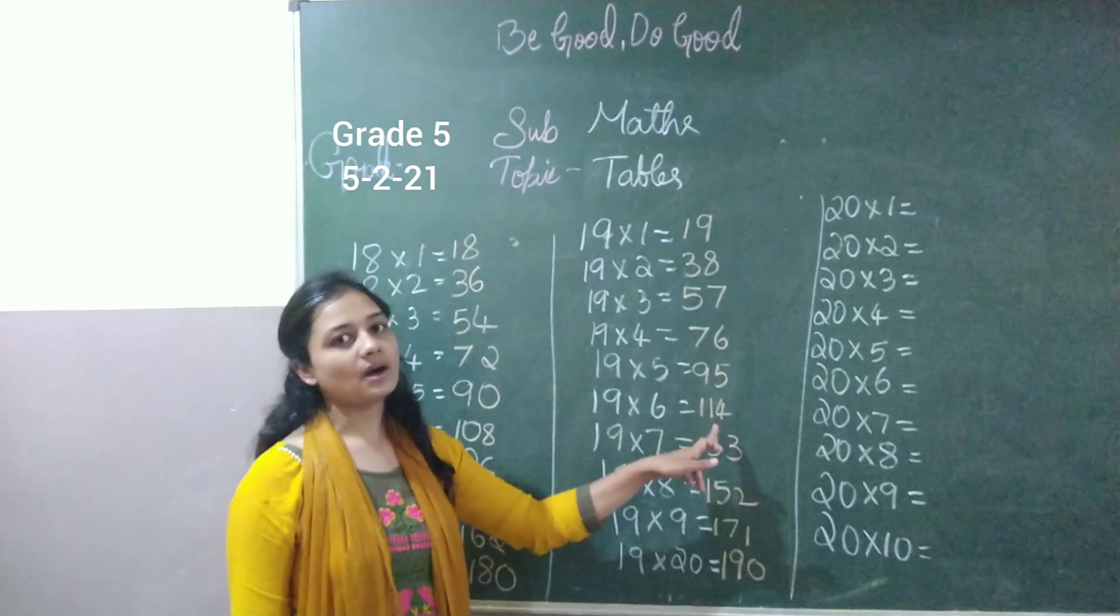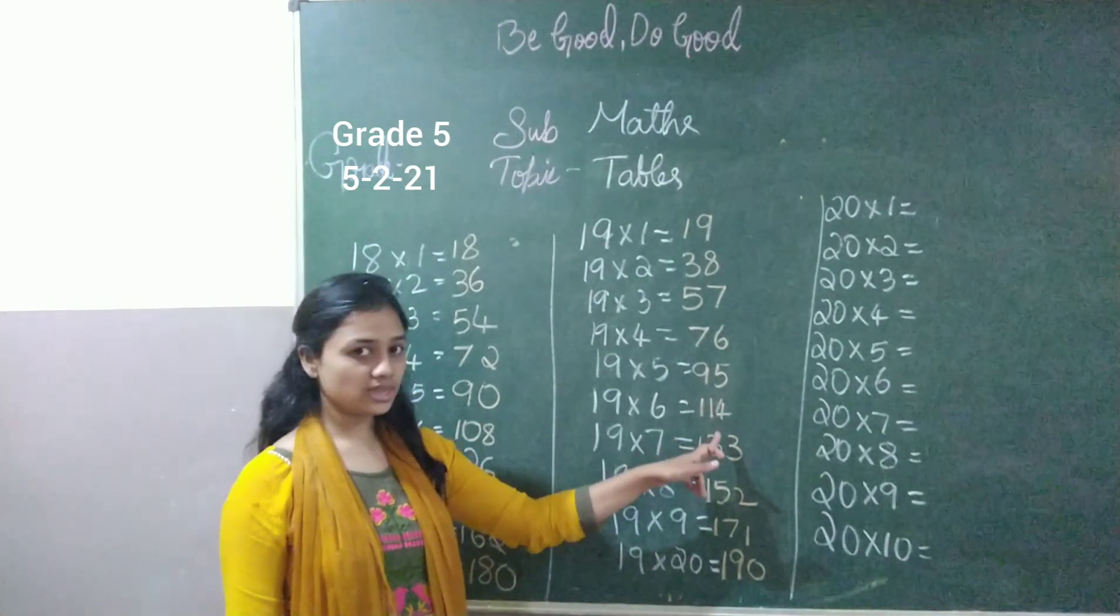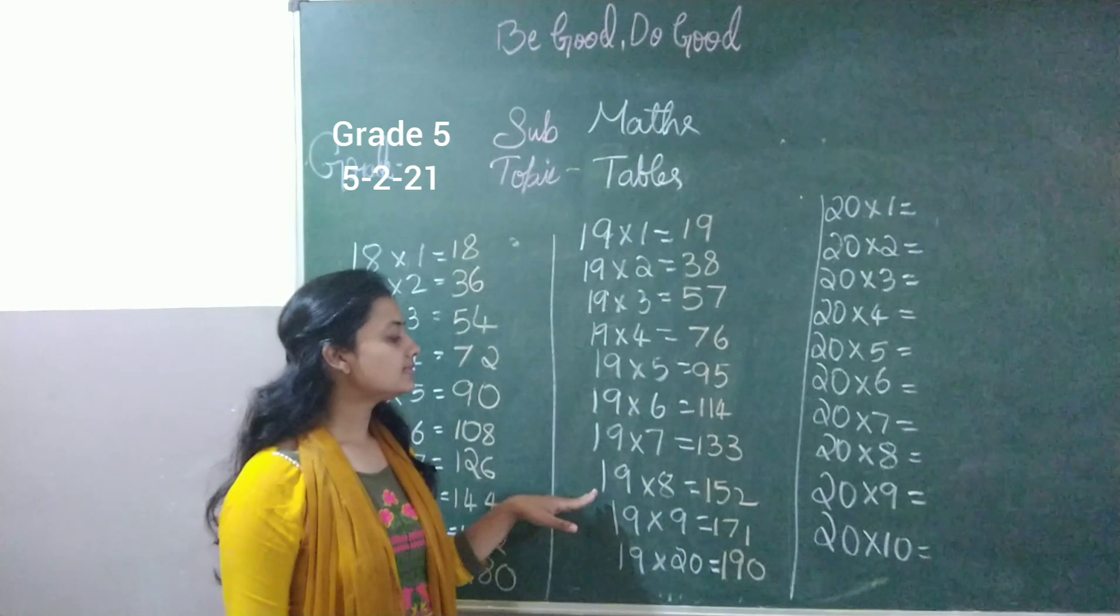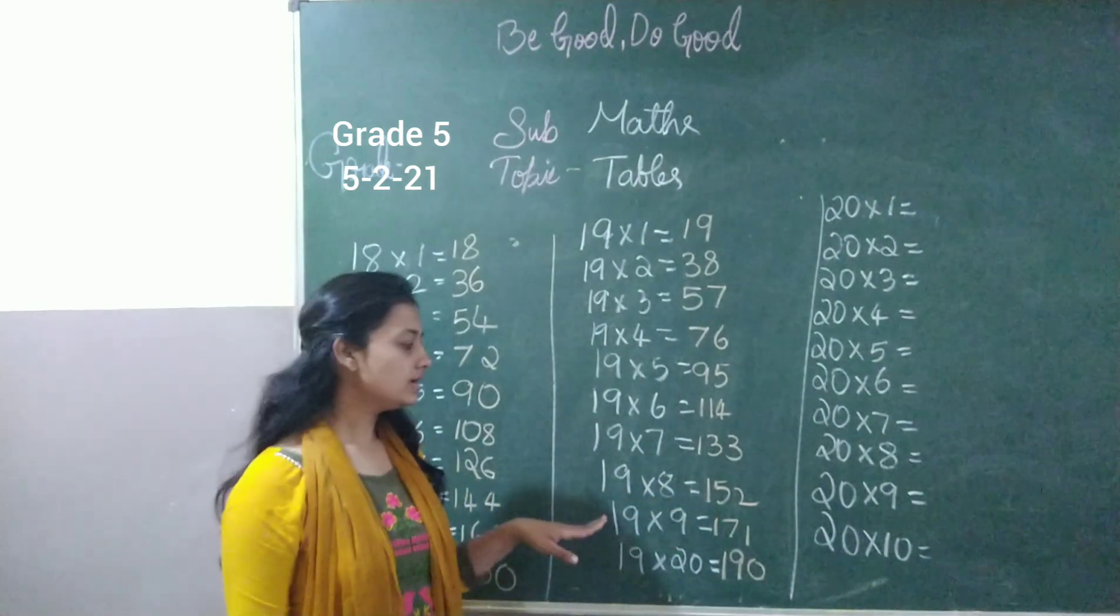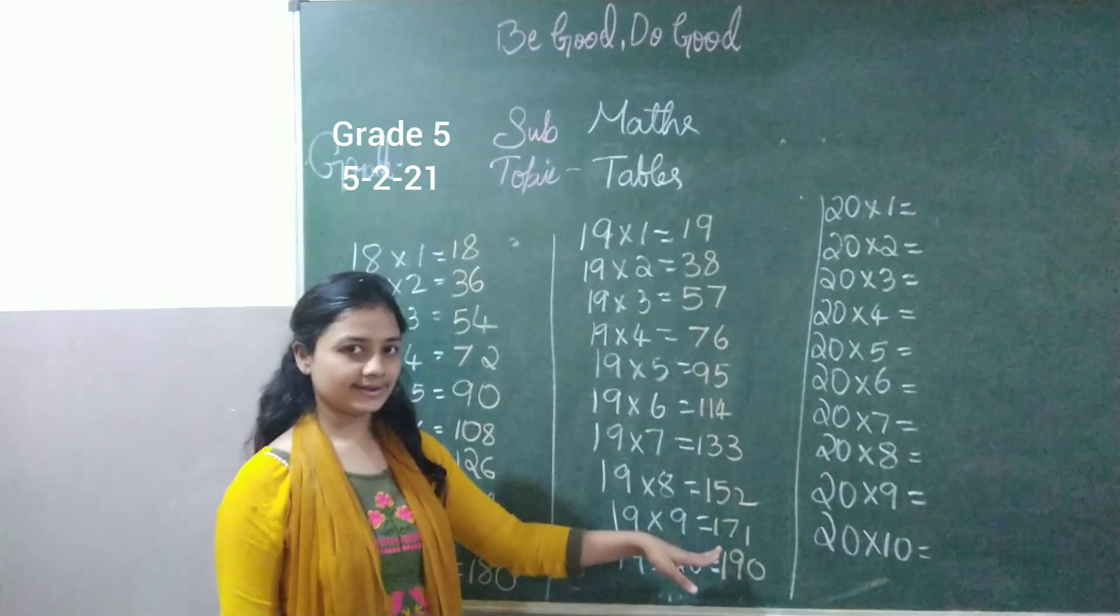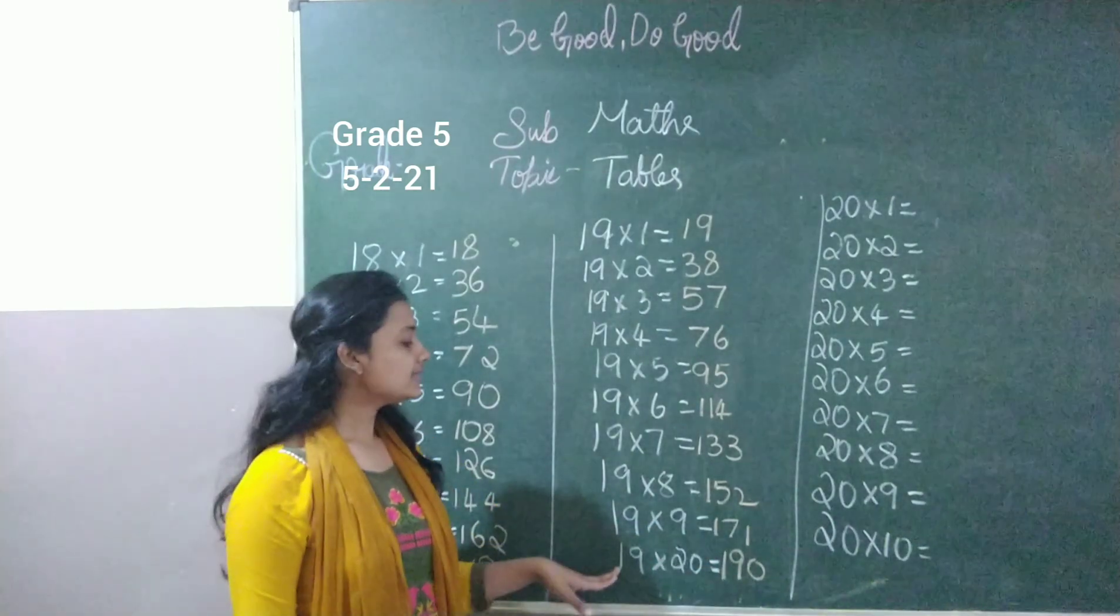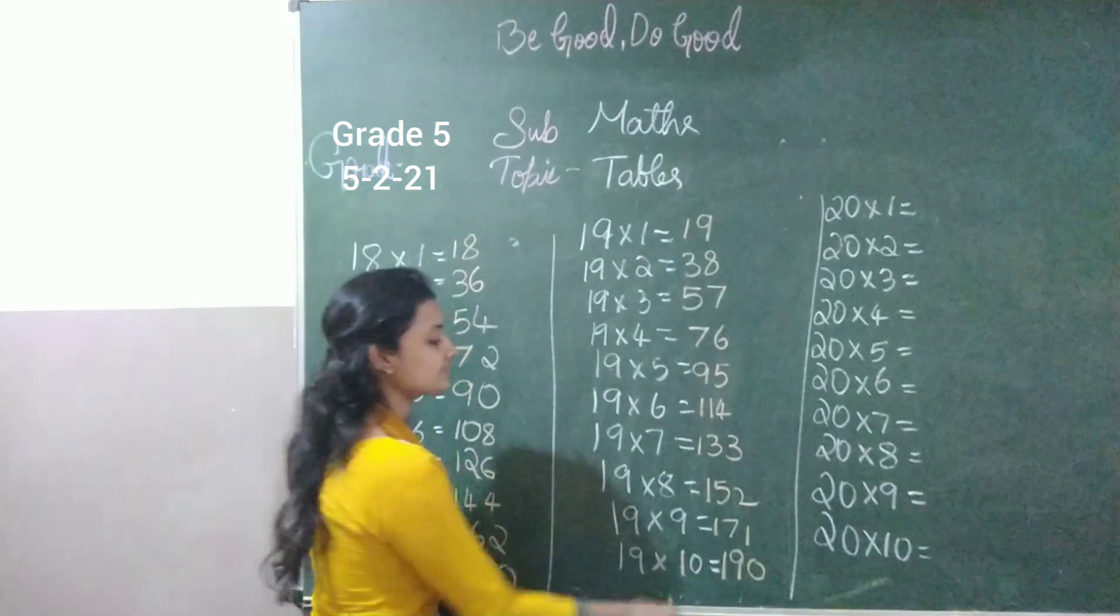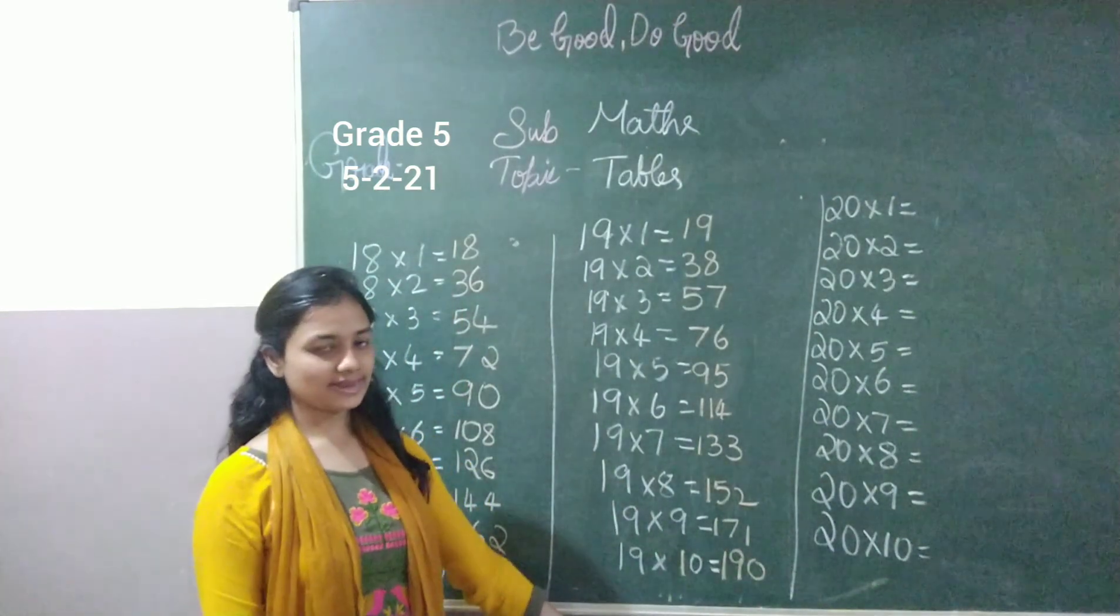19 times 6 is 114. 19 times 7 is 133. 19 times 8 is 152. 19 times 9 is 171. 19 times 10 is 190. So we did 19 tables.